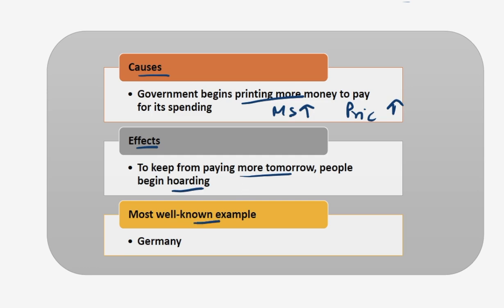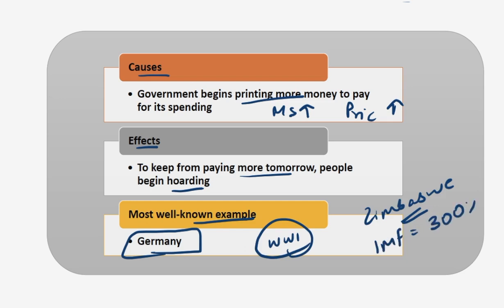The well-known example is Germany, wherein it printed currency after World War I to pay for spending. One more example is Zimbabwe. The IMF has estimated that its inflation is around 300%. Hyperinflation, in short, means when the inflation is too much, as you can see in the current example of Zimbabwe.